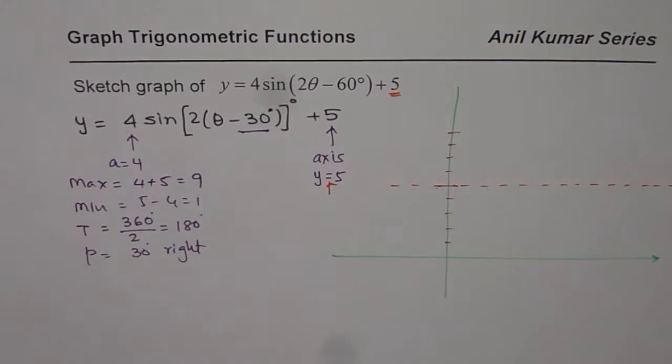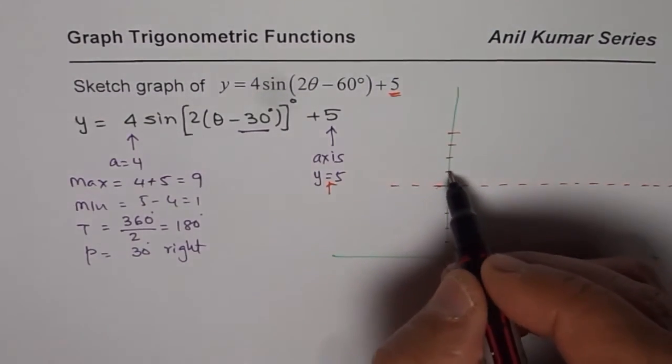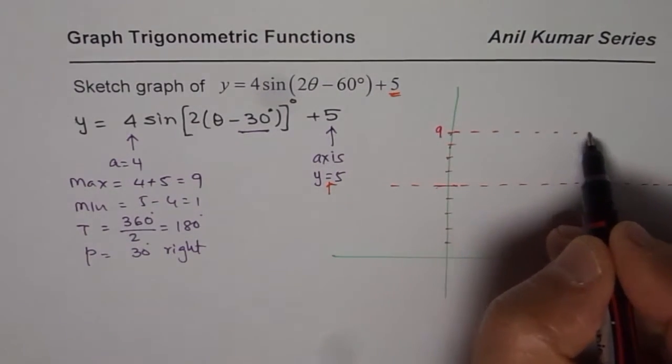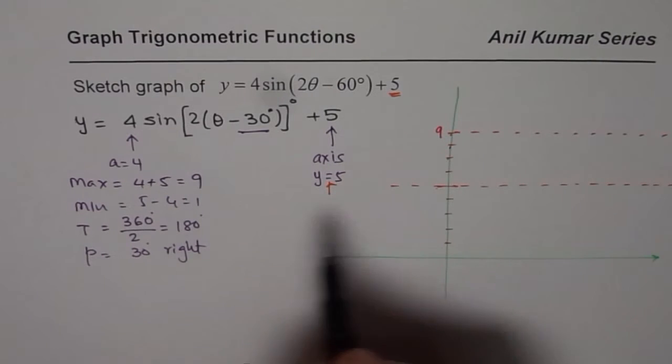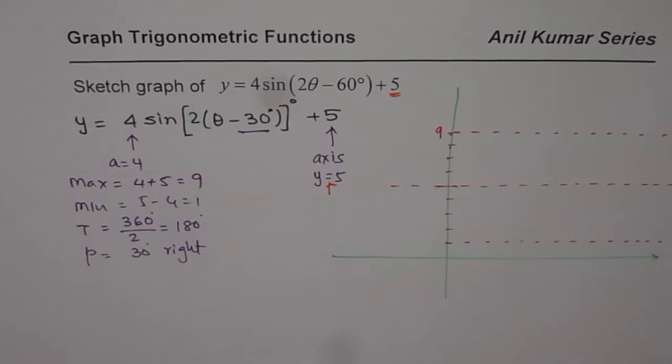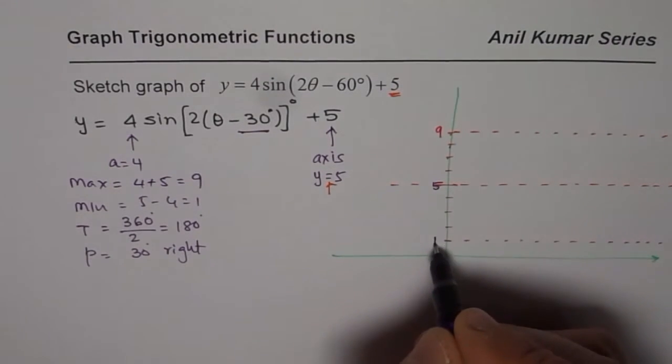Let me draw a dotted line for the maximum. Maximum will be 5 plus 4, so 1, 2, 3, 4 which is 9 for us. Just a dotted line showing maximum and minimum at 1. So we have 5, 1, 9.